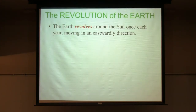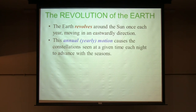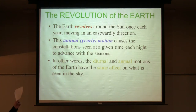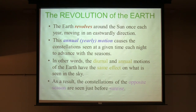The last part of this first half is about the revolution of the earth. The earth goes around the sun once a year moving in an eastwardly direction, the same way it rotates. This annual motion causes the constellations seen at a given time on the same night to advance during the year — we've already seen that with the sky maps. The diurnal and annual motions have the same effect in the sky: during the night, constellations in the east move up higher because the earth's rotating; later in the year at the same time of night, those constellations are up higher because the earth has moved around the sun towards the east. Both are eastward motions — one is just faster than the other.